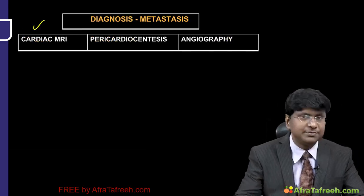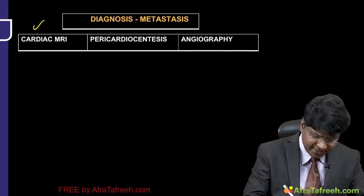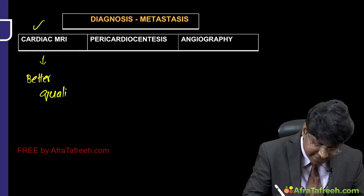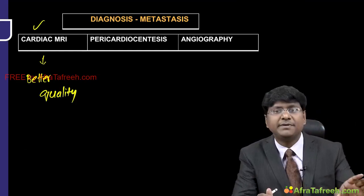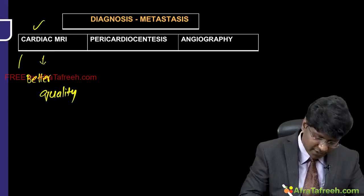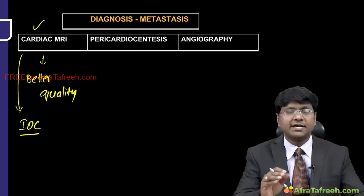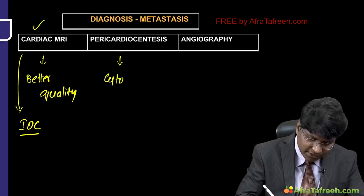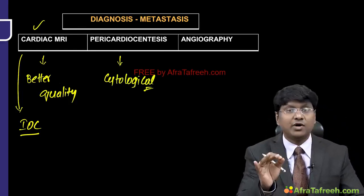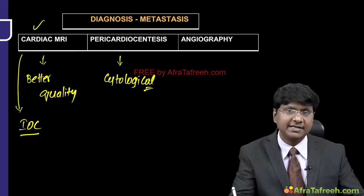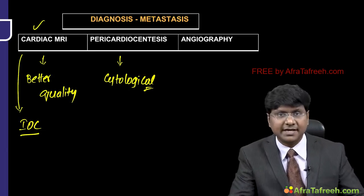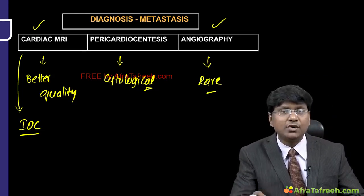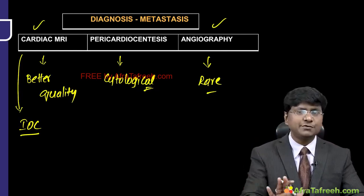Cardiac MRI is the investigation of choice for cardiac metastasis, providing superior image quality. Pericardiocentesis is done for cytological analysis or when pericardial effusion develops. Angiography is rarely done, mainly to delineate myocardial lesions.